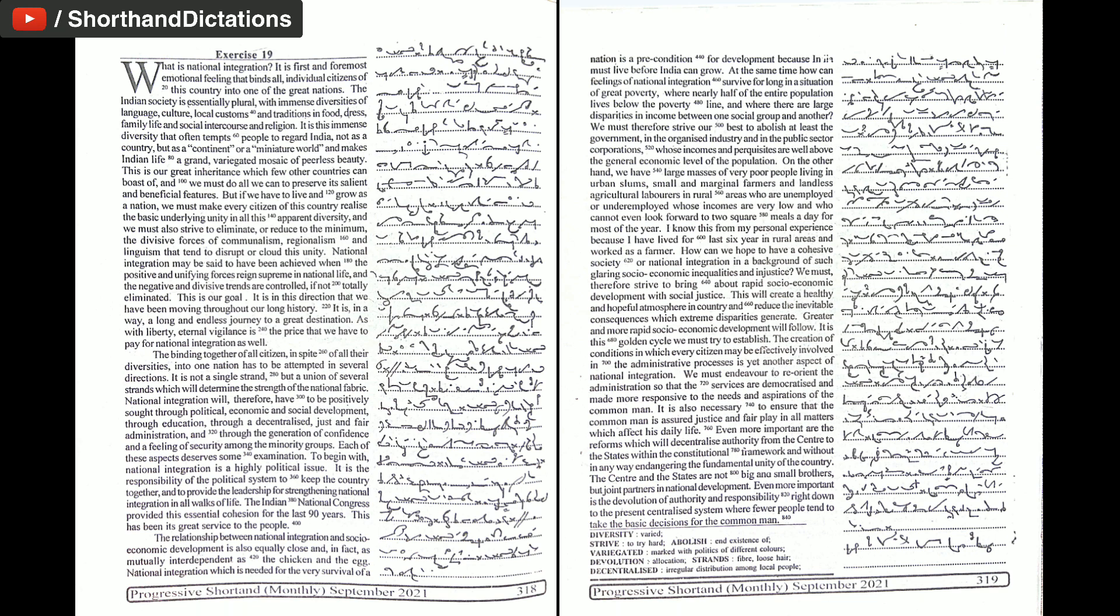We must, therefore, strive to bring about rapid socio-economic development with social justice. This will create a healthy and hopeful atmosphere in country and reduce the inevitable consequences which extreme disparities generate. Greater and more rapid socio-economic development will follow. It is this golden cycle we must try to establish.